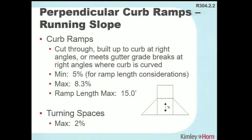The maximum ramp run length on both perpendicular and parallel curb ramps is 15 feet, and you can go up to a maximum of 8.3 percent on the running slope. Make sure your designs specify something less than the maximum to account for construction variation.